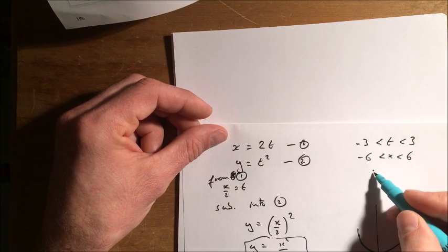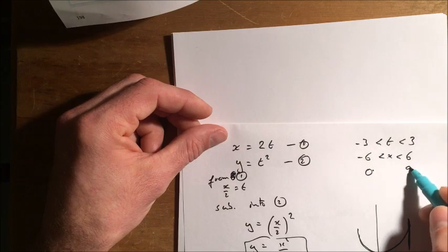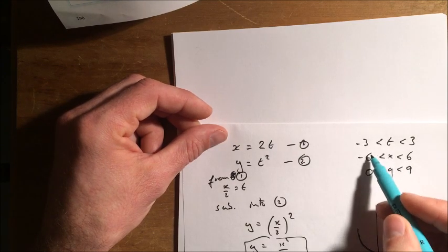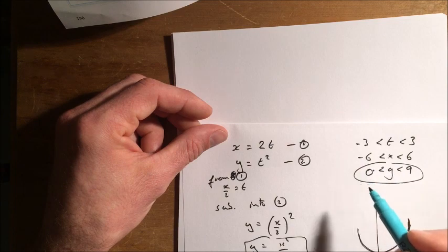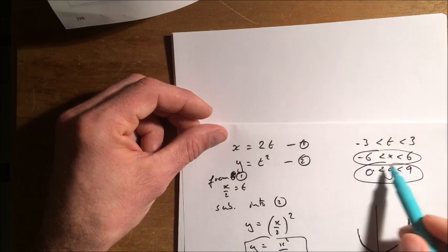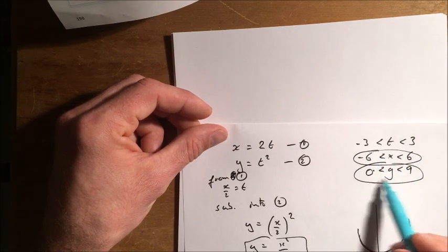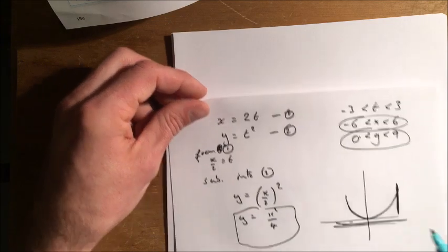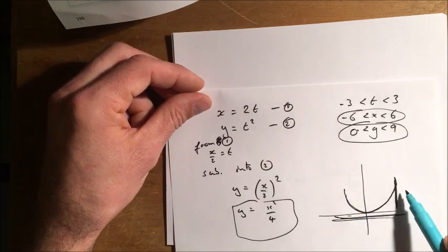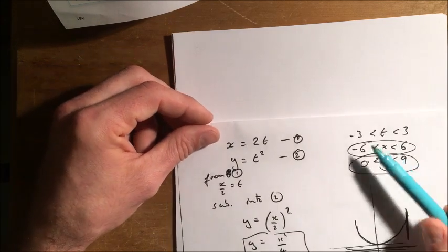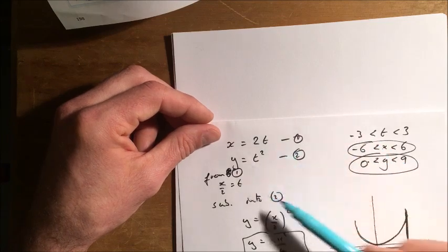The Y values are, well, T goes from minus 3 to 3, so Y goes from 0 up to 9, doesn't it? And remember, the range is the Y values. The domain is the X values. So the domain of this is that. The range of this is that. Now, we can see that from the Cartesian sketch, or we can see it from the parametric sketch as well.